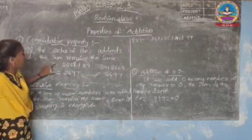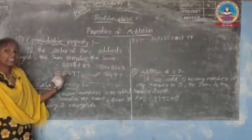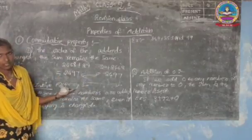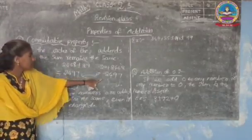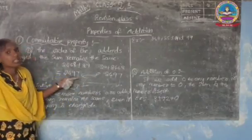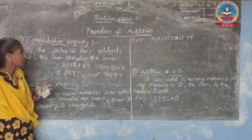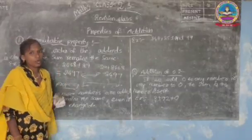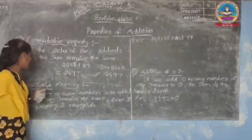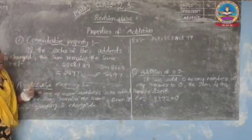If we add the given numbers in any order, we get the same sum. It is also called order property. Let us see the next one: associative property.